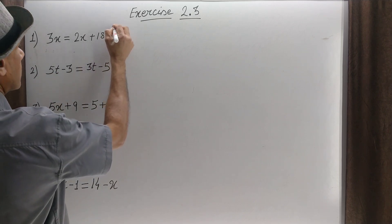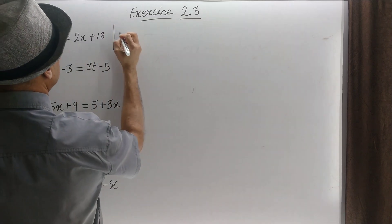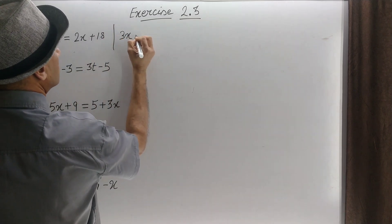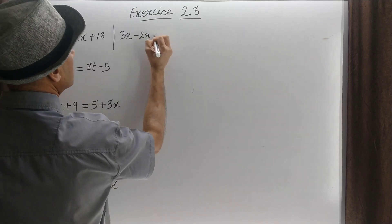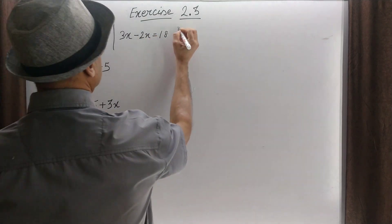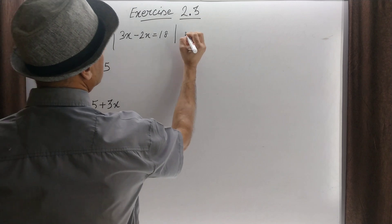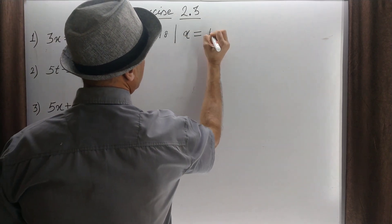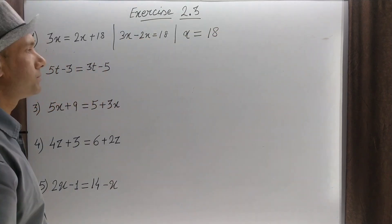We can write it as 2x moved to this side. So this becomes 3x minus 2x is equal to 18. So x is equal to 18. Clear?